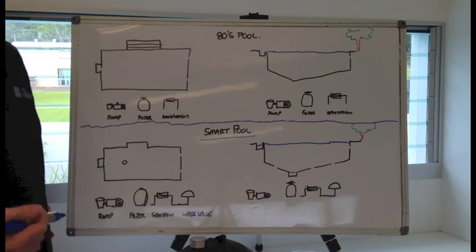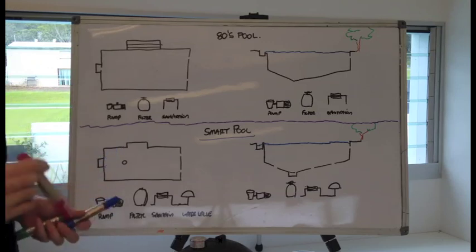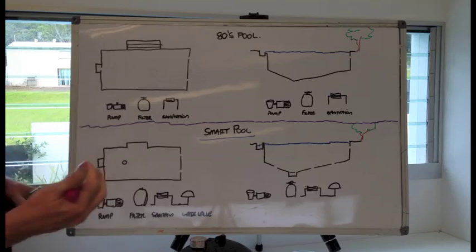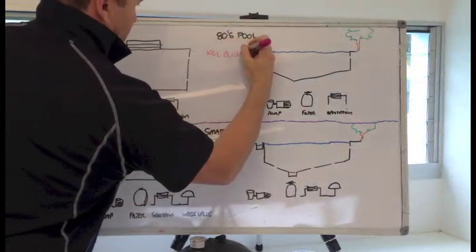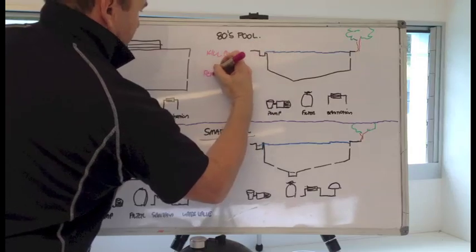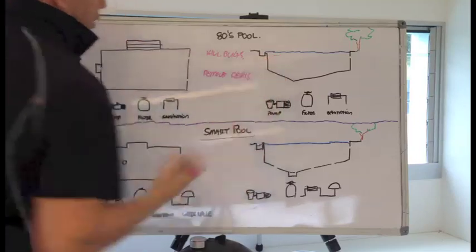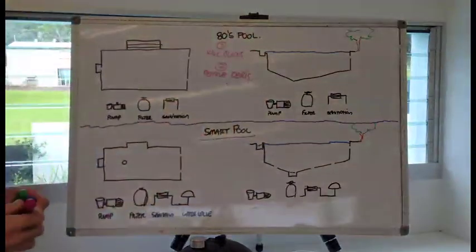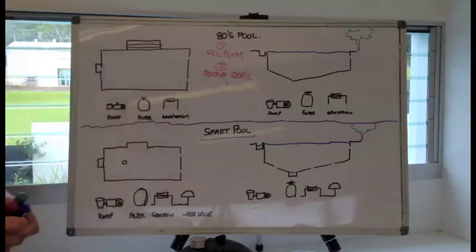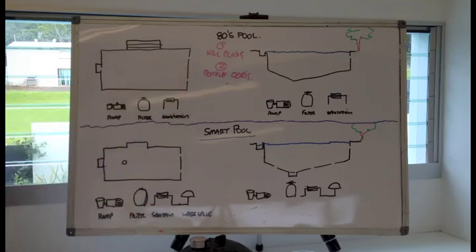This will help you better understand how we try and filter and sanitize the water. A lot of people just assume that you have to have a filter and a sanitation system but they don't really know the reason why. Simply put, the two things that we want to do in a swimming pool is we want to kill bugs and we want to remove debris.